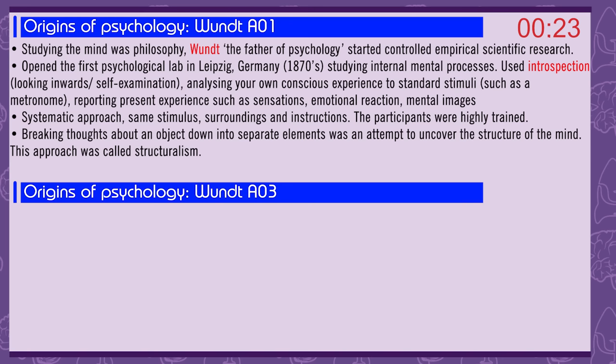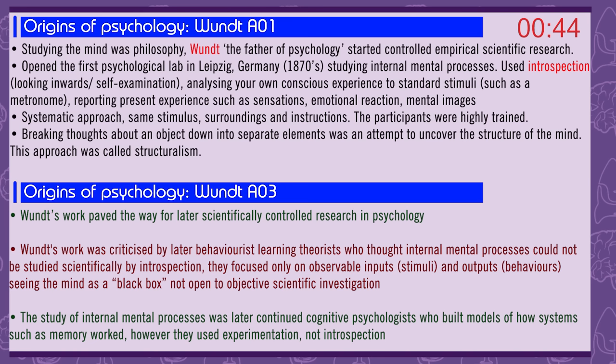Participants reported present experience such as sensations, emotional reactions, and mental images. It was a systematic approach with the same stimulus, surroundings, and instructions. Participants were highly trained. Breaking thought about an object down into separate elements was an attempt to uncover the structure of the mind — this approach was called structuralism. Wundt's work paved the way for later scientifically controlled research in psychology.